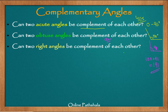Can two right angles be complements of each other? The same thing applies here. For angles to be complementary, their sum must be equal to 90 degrees. If I add two right angles — a right angle is 90 degrees and another angle would also be 90 degrees — that comes out to be 180. So right angles can never be complements of each other. We conclude that it is only acute angles which, when added, become complements. Only acute angles can be combined to form complementary angles.